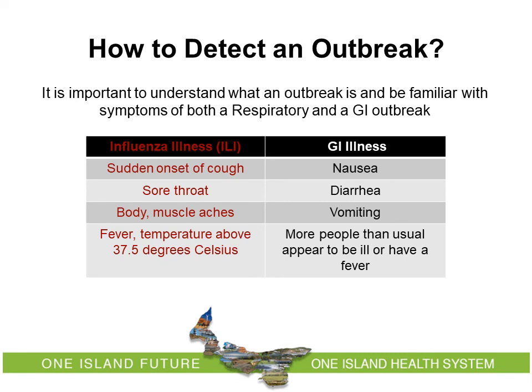How to detect an outbreak: It is important to be familiar with the symptoms of both respiratory and gastrointestinal outbreaks. Influenza is an example of a respiratory infection that commonly turns into an outbreak. Symptoms of influenza include sudden onset of cough, sore throat, body or muscle aches, and a fever above 37.5 degrees Celsius. Common GI symptoms include nausea, diarrhea, vomiting, or noticing that more people than usual appear ill or have a fever.